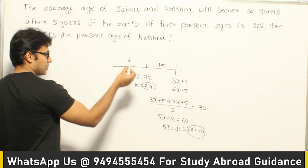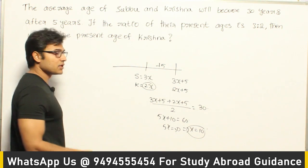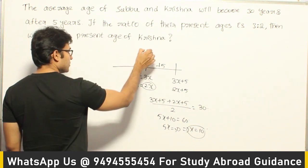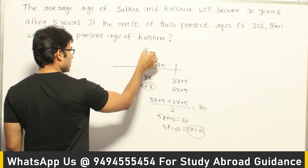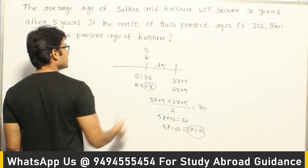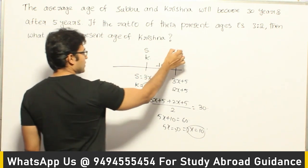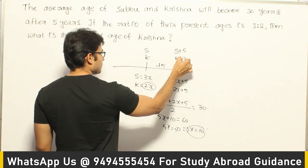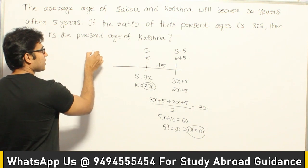The other way of solving it is to assume that Subbu's age is S and Krishna's age is K. After 5 years, their ages will be S + 5 and K + 5. From this, you know the ratio.